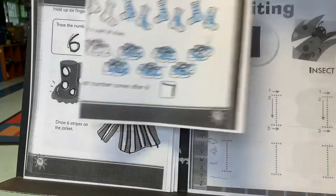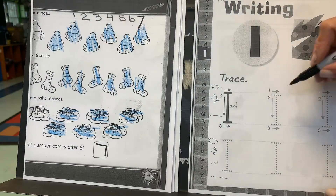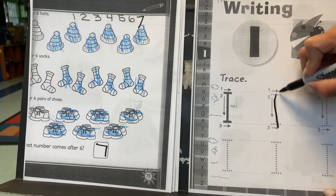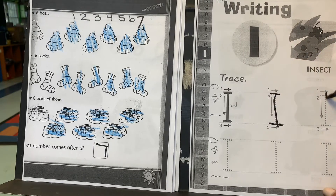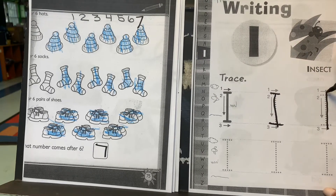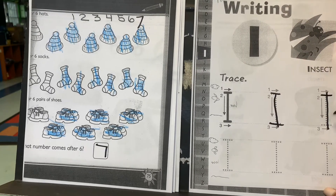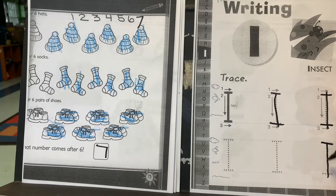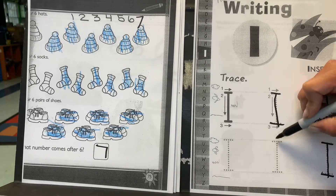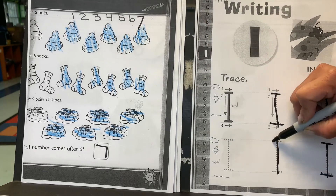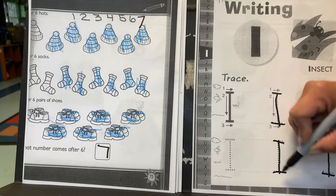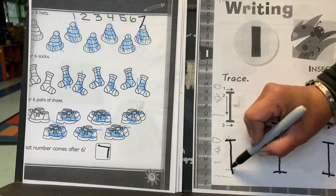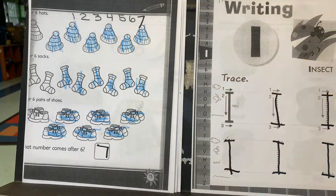The next page is the letter I. We're going to trace from the skyline to the grass line, give it a top, skyline to the grass line, give it a top and bottom, skyline to grass line give it a top and bottom, skyline to the grass line give it a top at the skyline and a bottom at the grass line.